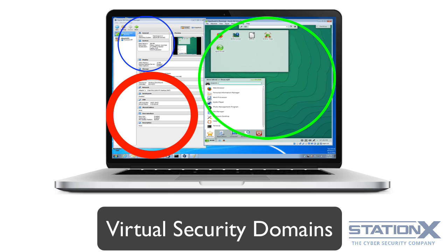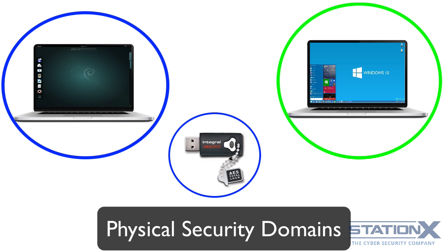Think about the type of security domains that you might want as you go through the course. Domains you might have in extreme cases could be a work domain, personal banking, a temporary or non-persistent domain that is used temporarily and then destroyed, and a high privacy domain. All of these are possible in different ways with different techniques and not necessarily that onerous depending on how you set them up. Let's talk more about physical isolation.